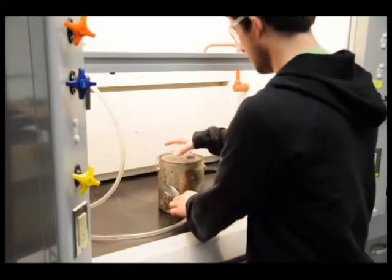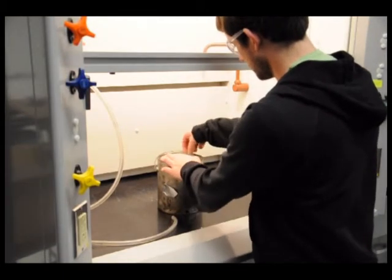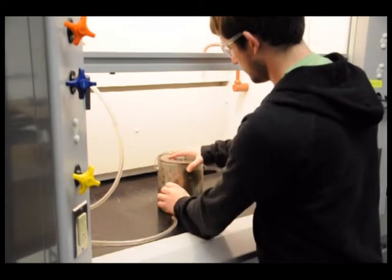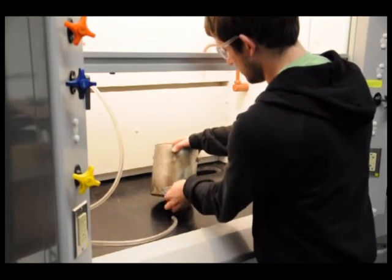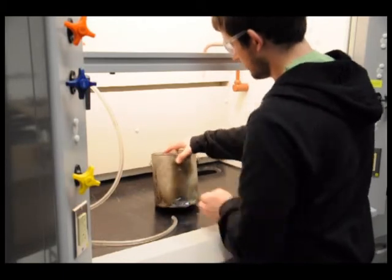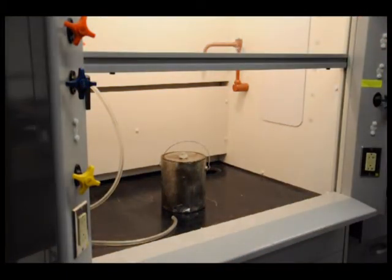When the can is full, duct tape is placed over the top and bottom holes to keep the natural gas from escaping. Do not let the can sit for too long as the duct tape is not a perfect seal. It may explode on lighting if enough air is allowed to get in before it is lit.